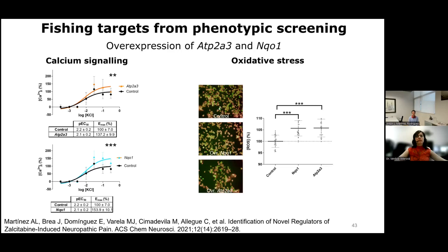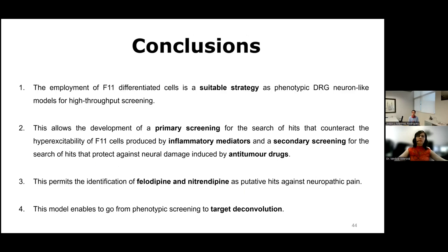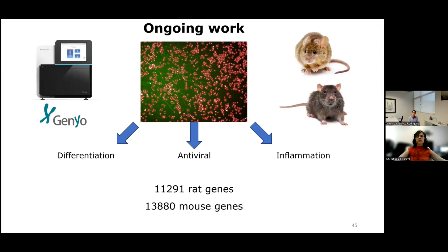We checked that the overexpression of both genes induces the same effect as zalcitabine in calcium signaling and in oxidative stress. So we can conclude that the employment of differentiated F11 cells is a suitable strategy as a phenotypic dorsal root ganglion neuron-like model for high-throughput screening. It allows the development of a primary screening for hits that counteract the hyperexcitability of F11 cells by inflammatory mediators, a secondary screening for hits that protect against neuronal damage induced by anti-tumor drugs, and it permits identification of felodipine and nitrendipine as putative hits against neuropathic pain. This model also enables progression from phenotypic screening to target deconvolution.